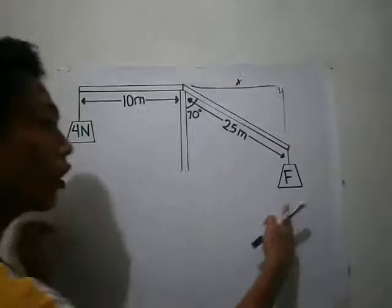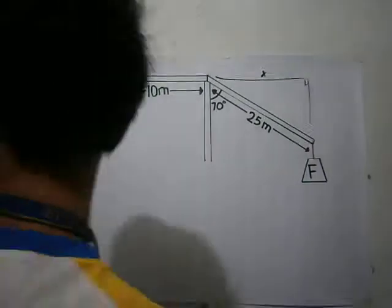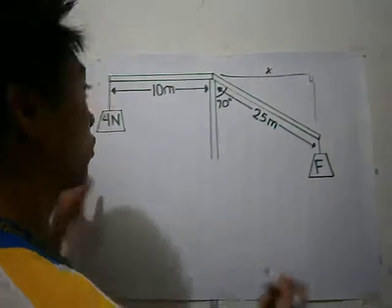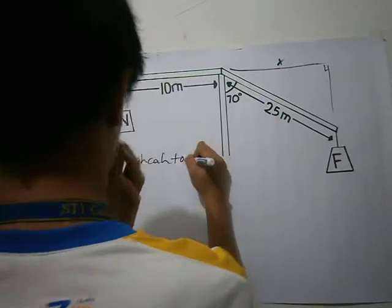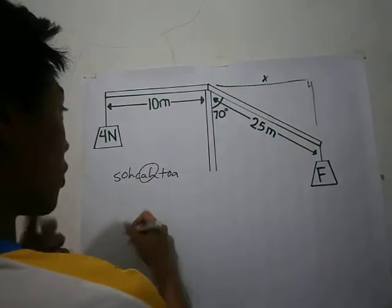We will now find F. First we will find X. We will use SOHCAHTOA. We will use cosine.